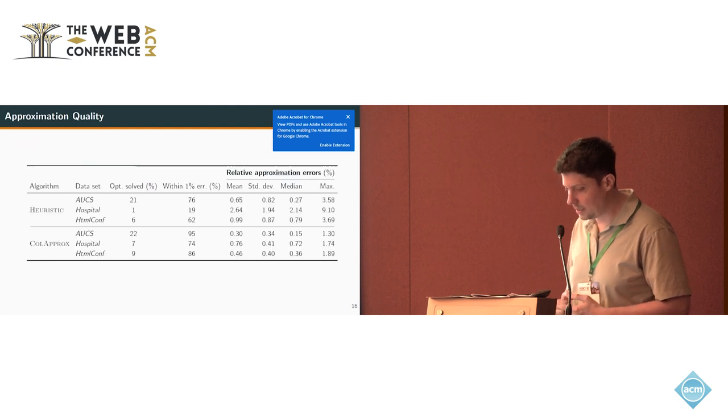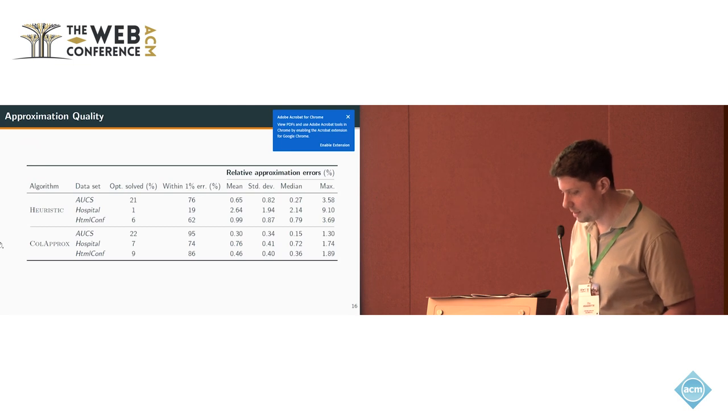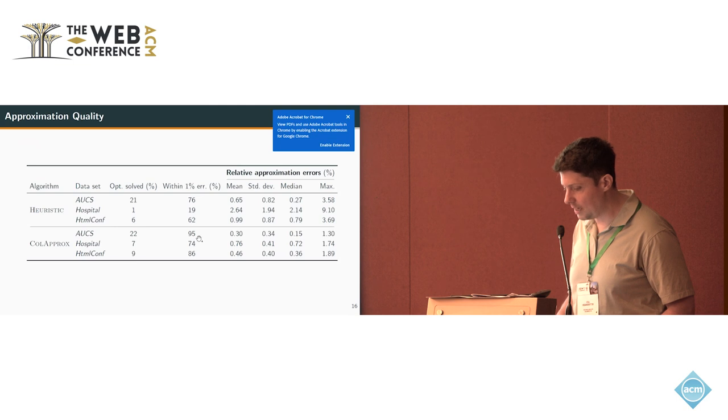We see that our approximation algorithm often finds the optimal solution or is close to the optimal solution, as you see here. In 7 to 22 percent of the instances, the approximation finds the optimal solution, and in 70 to 95 percent, the error was within 1 percent.